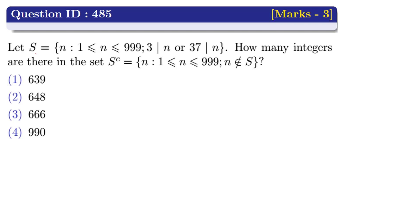Let S be the set containing the element n such that 1 ≤ n ≤ 999, where 3 divides n or 37 divides n. How many integers are there in S complement — the set containing n such that 1 ≤ n ≤ 999 and n does not belong to S? Option 1: 639, Option 2: 648, Option 3: 666, Option 4: 990.